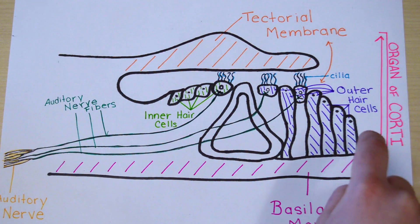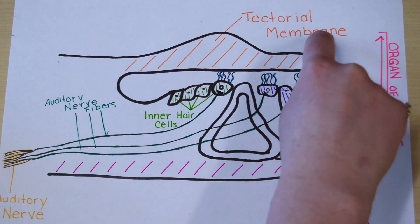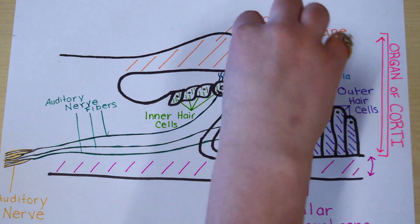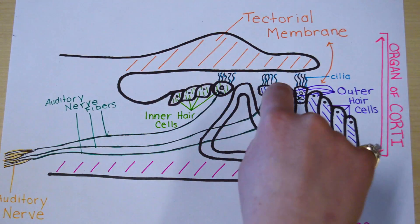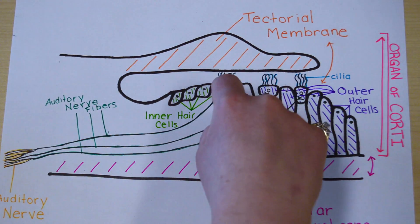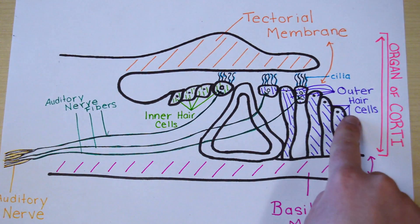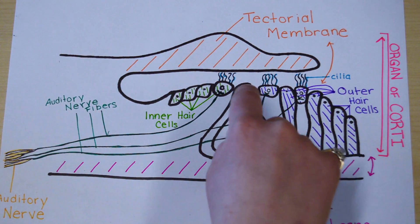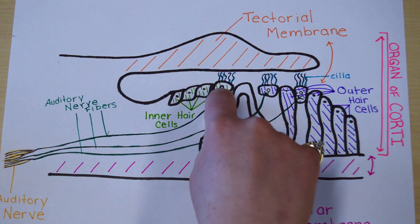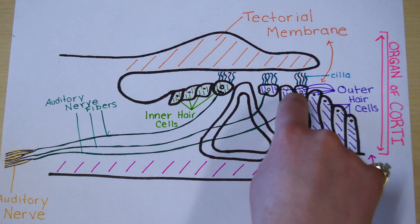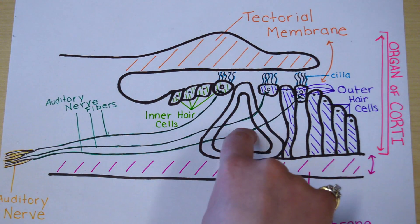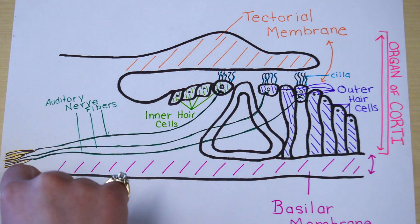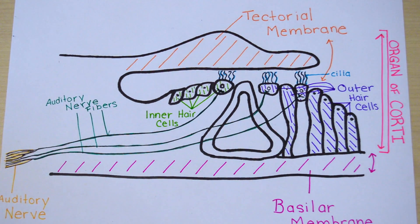As the organ of Corti moves, the tectorial membrane moves in a sort of windshield-wiper way and causes the cilia — the extending hair cells out of the inner and outer hair cells — to vibrate. This vibration causes a signal to be released from the inner and outer hair cells to the auditory nerve fibers, which together form the auditory nerve. As these signals get sent to the brain, this is what causes someone to hear.